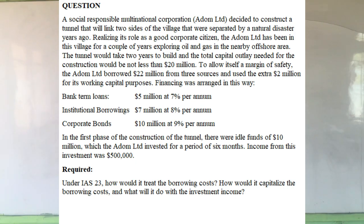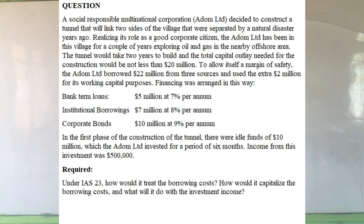To allow itself a margin of safety, Adam Limited borrowed $22 million from three sources and used the extra $2 million for working capital purposes. Financing was arranged as follows: bank term loans of $5 million at 7% per annum; institutional borrowings of $7 million at 8% per annum; and corporate bonds of $10 million at 9% per annum. In the first phase of construction, there were idle funds of $10 million which Adam Limited invested for six months, generating investment income of $500,000. Required: under IAS 23, how would it treat and capitalize the borrowing cost, and what would it do with the investment income?